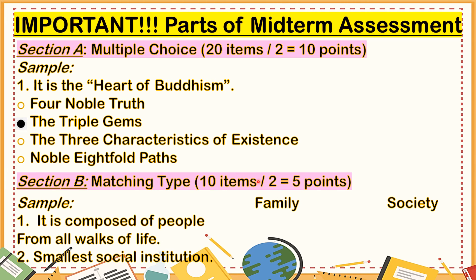Section B is matching type, 10 items, divided by 2 equals 5 points. The choices are written from the left side going to the right side. For matching type, we have Part 1, numbers 1 to 5, and Part 2, numbers 6 to 10. For example, 'It is composed of people from all walks of life' — the answer is society, so you tick and it will be blackened. Number 2, 'smallest social institution' — the answer is family, so you tick and it will be blackened. That is your answer.